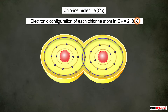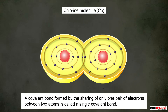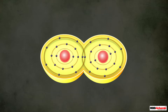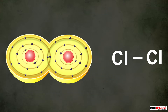A covalent bond formed by the sharing of only one pair of electrons between two atoms is called a single covalent bond. A single covalent bond is represented by a single dash between the symbols of two atoms.